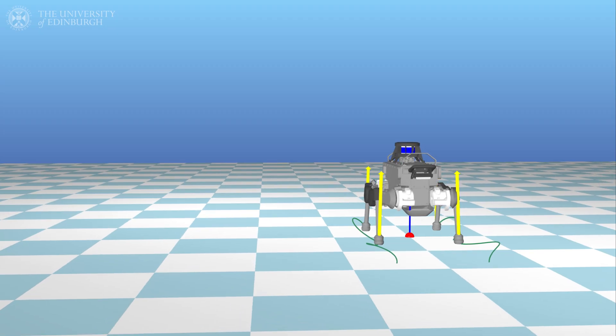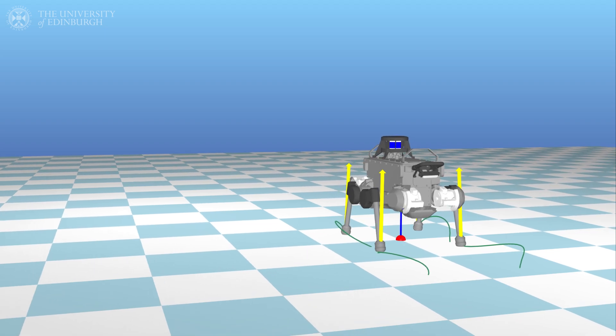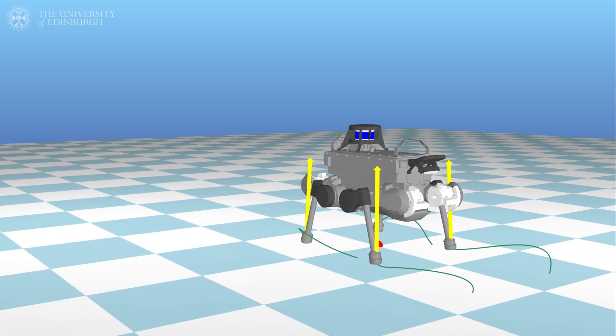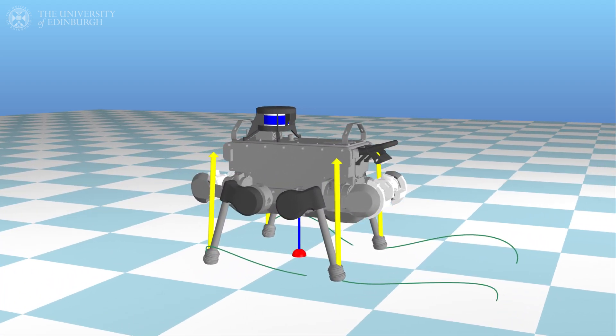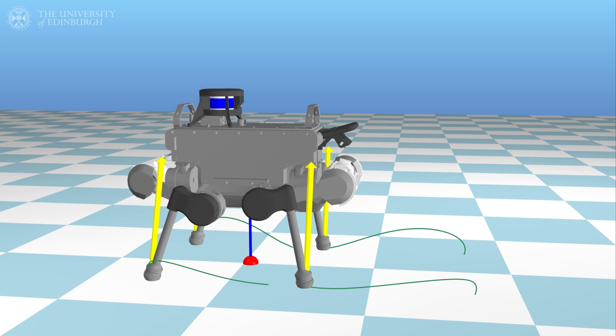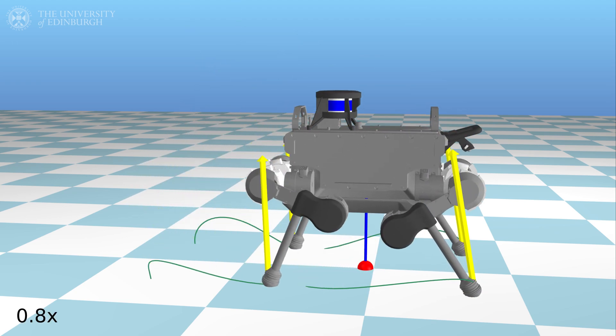In the next video, the robot jumps forward by half a meter. We do not enforce specific feet positions during swing phases. This allows the solver to naturally find nice curved paths, such as the ones shown here.